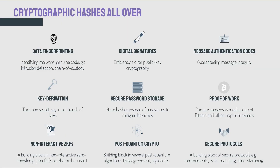Cryptographic hashes are kind of a big deal — they're used all over the internet for many different applications. For example, the data fingerprinting application we just described can be used to fingerprint source code, like if you use Git or GitHub. It can be used to identify malicious files, it's used in intrusion detection, and it's even used by law enforcement to establish chain of custody of hard drive images. Hashing is also used as an efficiency method for digital signatures — if we have to do a really costly public key operation, what if we could do it on a short fixed-length string instead of a big blob of data? They can also be used to create message authentication codes, which are essential for proving the integrity of data sent across the internet.